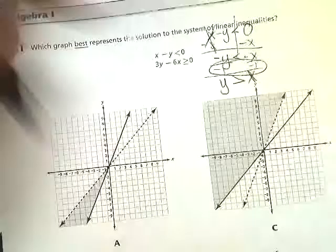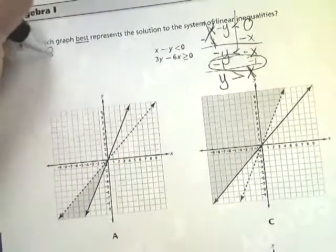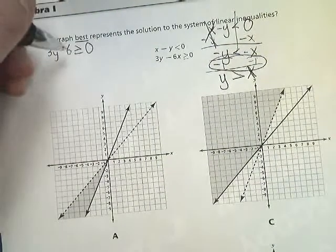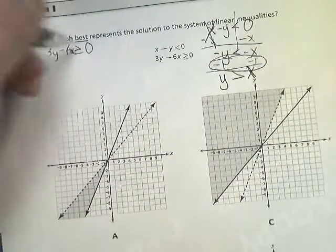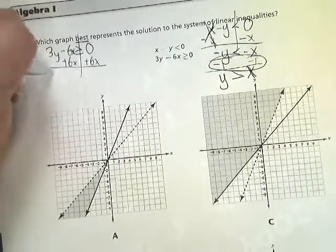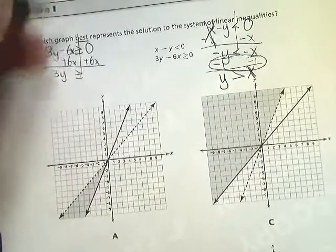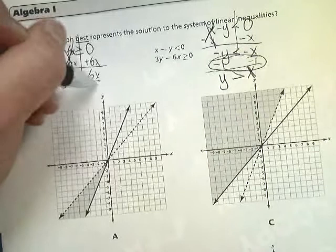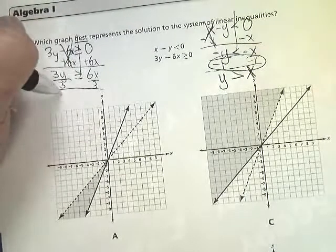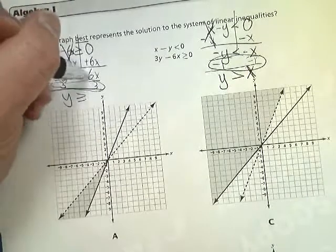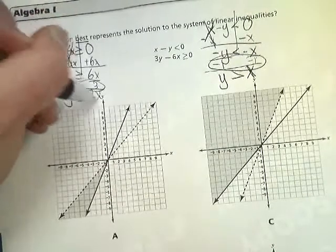Now for the other one, 3y minus 6x is greater than or equal to 0. That's an x there, sorry. I need to get y by itself, so I'm going to add 6x to both sides. Those cancel out. 0 plus 6x is 6x. Divide by 3. Now I'm dividing by 3 here, and this 3 is positive, so I do not need to flip this over. 6 divided by 3 is 2x.